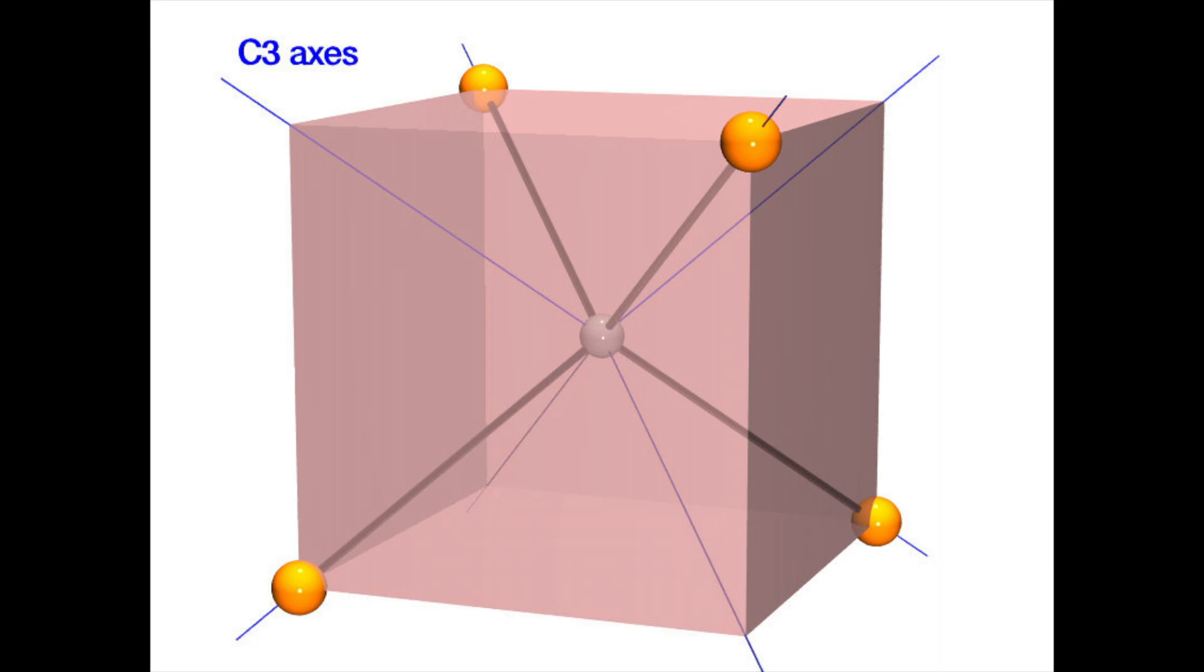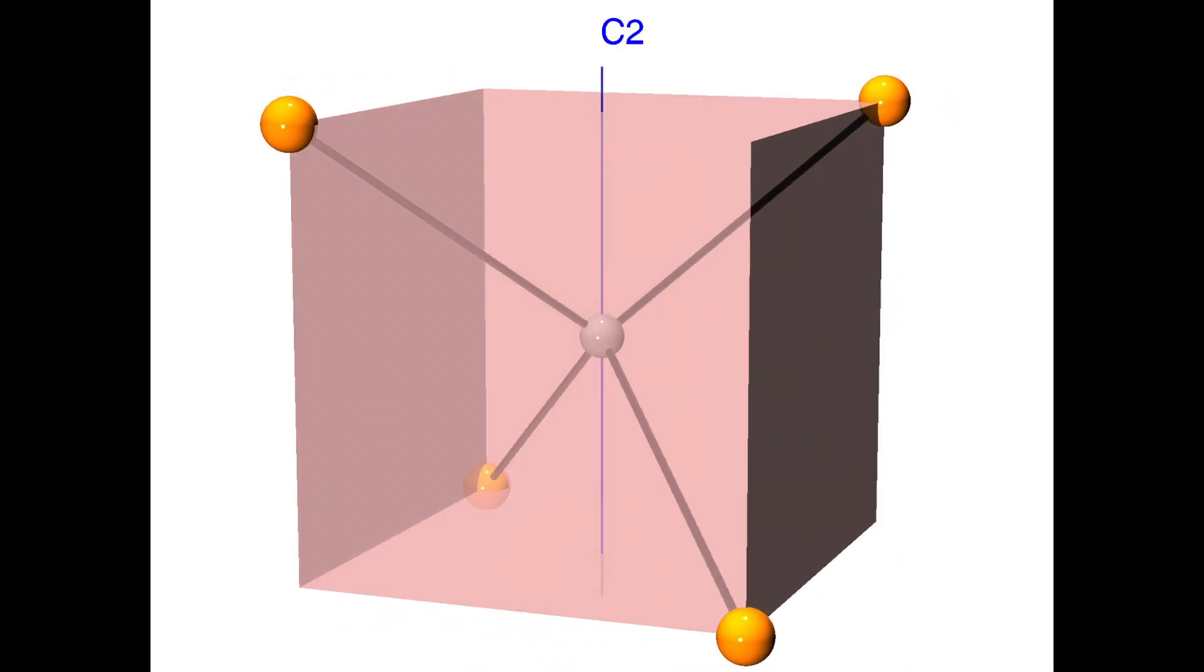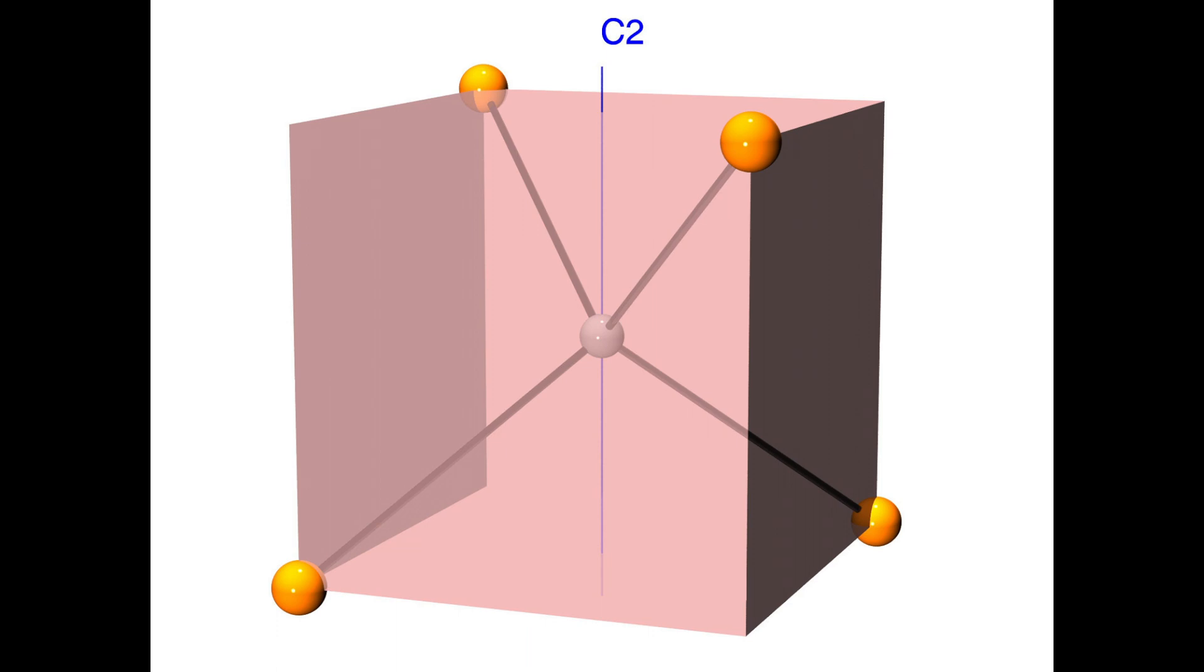Now let's find the three C2 axes. With the molecule positioned in a cube in this way, the C2 axes run through the face centers of the cube. A 180-degree rotation leaves the molecule apparently unchanged.